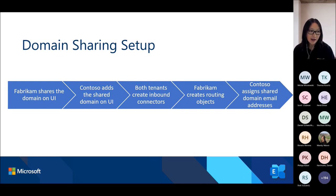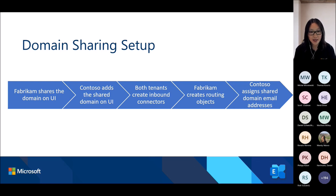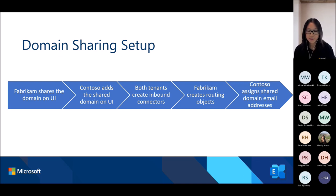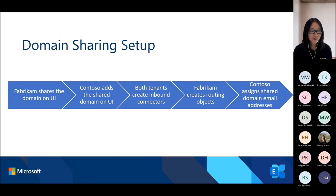After the feature is enabled, the tenant that wants to share the domain — in our example, Fabrikam — can go through the setup wizard and share a custom domain. The tenant the domain is shared with — Contoso — needs to add the domain once the invitation is sent. Domain sharing requires some collaboration between the Fabrikam and Contoso admins. After that, both admins log into PowerShell to set up inbound connectors using a simple cmdlet. The inbound connectors allow mail between the two tenants to appear internal and trusted. The next step is creating routing objects in Fabrikam — used to facilitate inbound mail routing and ensure address uniqueness. The final step is assigning an email address with the shared domain to an end user in Contoso.